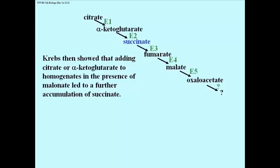Krebs showed that by adding alpha-ketoglutarate or citric acid to homogenates in the presence of malonate, in other words poisoned homogenates, succinate would accumulate. In other words, citric acid and alpha-ketoglutarate added would be oxidized, but succinic acid would accumulate.